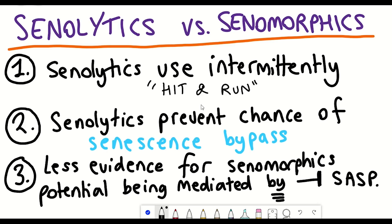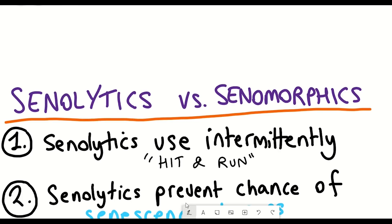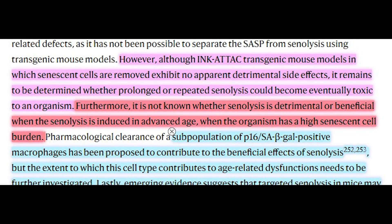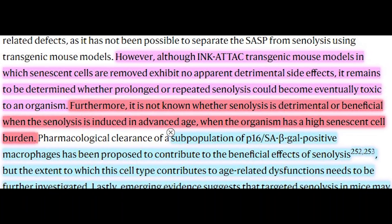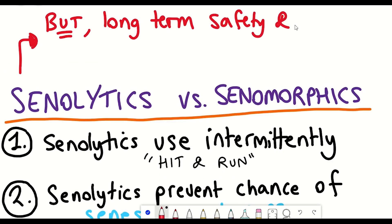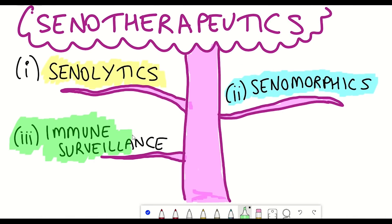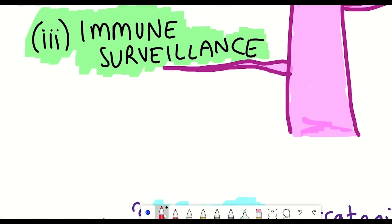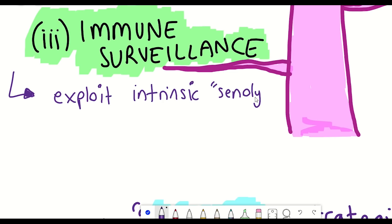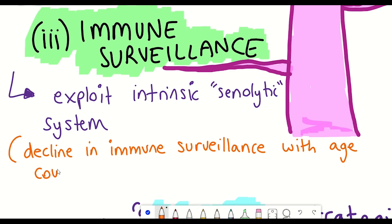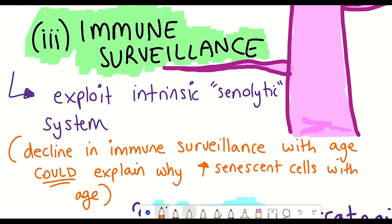It is worth mentioning that it's not known whether senolytics could have detrimental consequences, especially when used at advanced stages when there is a higher abundance of senescent cells. It's also not known if there are detrimental consequences to long-term use — but that's why clinical trials are underway. The last strategy is to activate the immune system to remove senescent cells, exploiting the organism's intrinsic senolytic system of immunosurveillance. One possible reason senescent cells accumulate in aged tissues is a decline in this immunosurveillance. Boosting natural immune mechanisms of senescent cell surveillance is an area of active research with therapeutic potential.